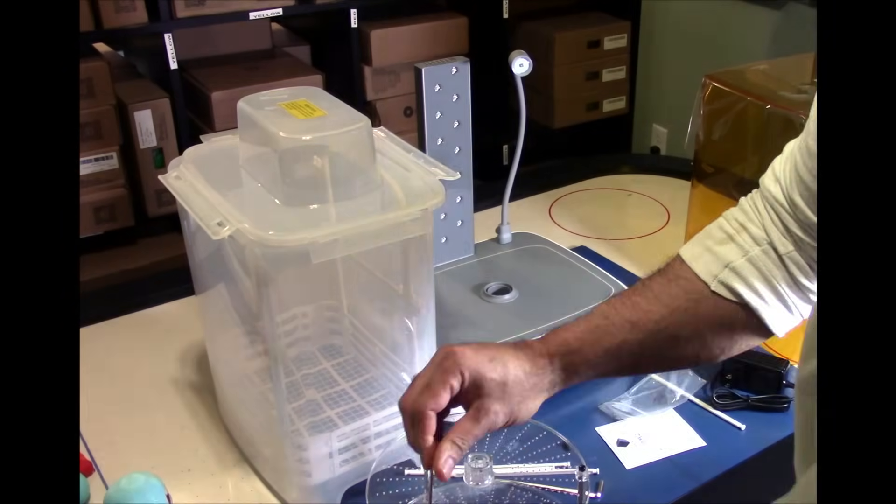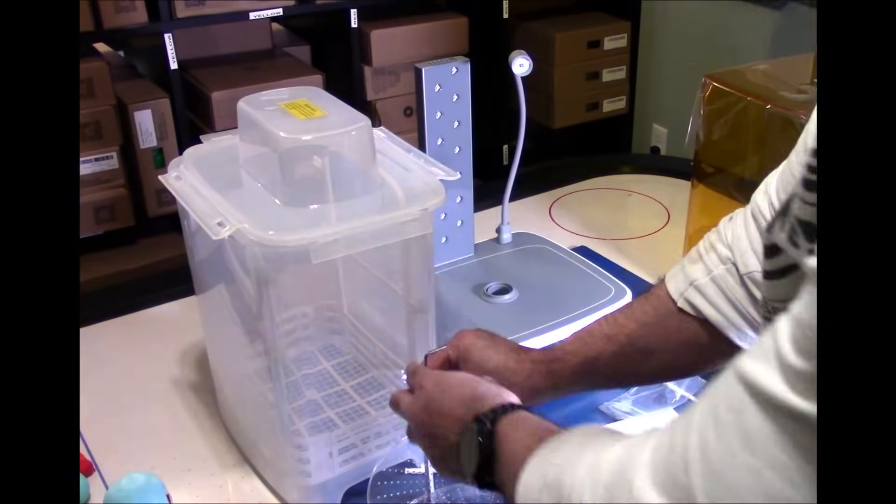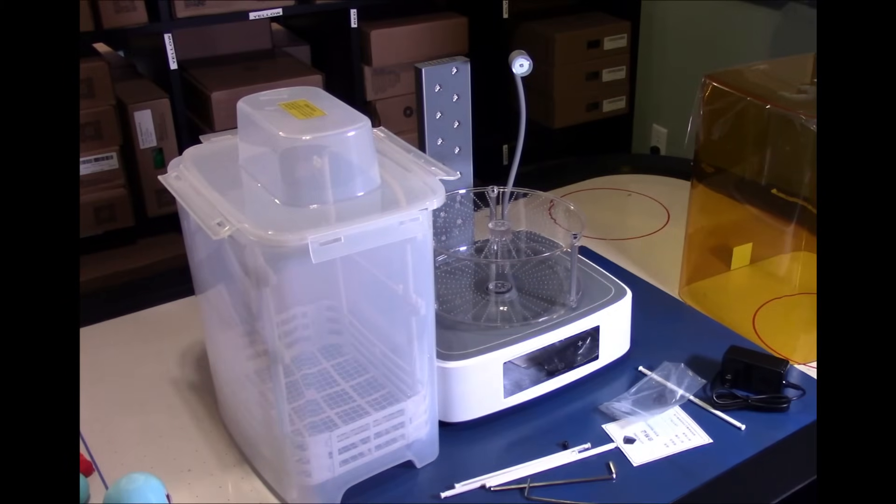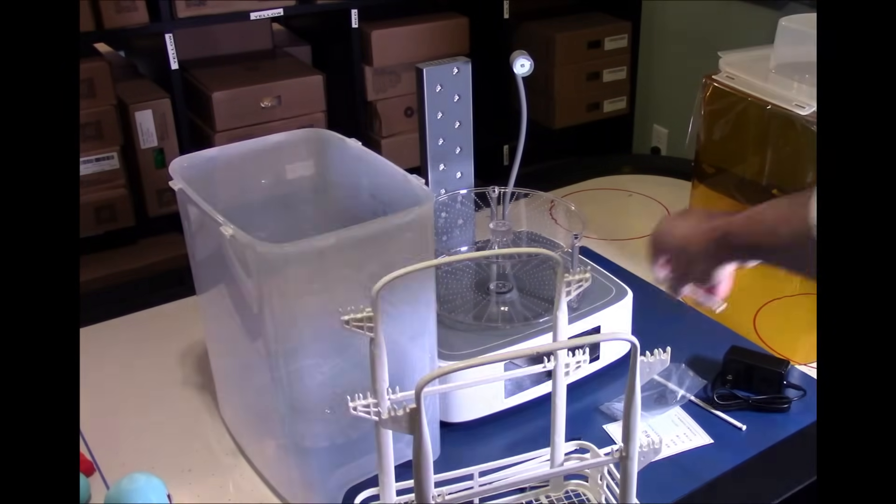As you can see with the unboxing, they provide everything. Large bin, dual basket, USB necklight, and two-level curing trays.